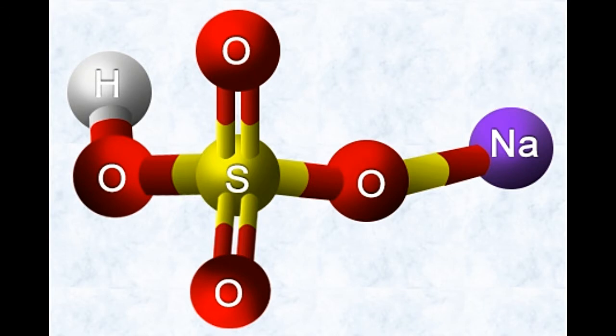Sodium bisulfate consists of a negatively charged hydrogen sulfate, or bisulfate, ion HSO4⁻ attached to a positively charged sodium ion Na⁺. The bisulfate ion consists of one sulfur atom showing an oxidation state of +6, joined by double bonds to two oxygen atoms, by a single bond to a third oxygen atom, and by a single bond to a hydroxyl ion. The oxygen atom with a single bond, which leaves it with an oxidation state of −1, bonds with a Na⁺ ion.